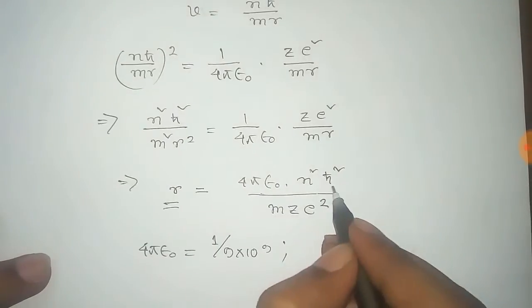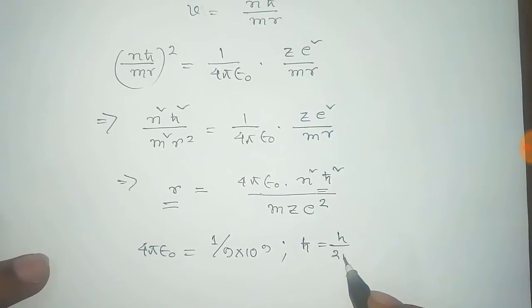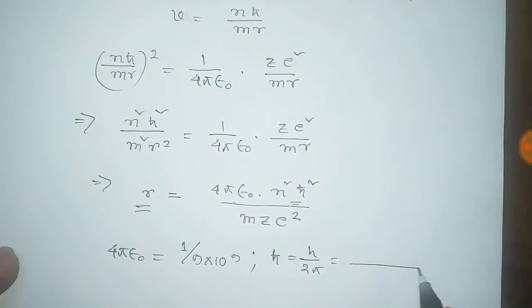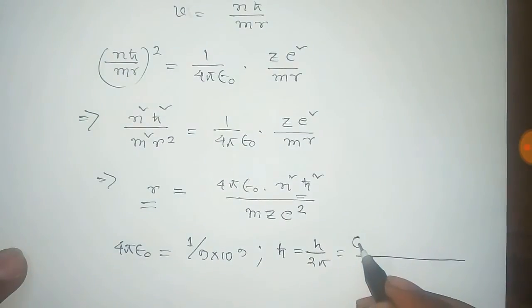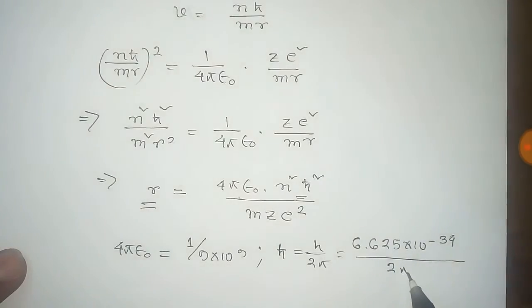The value of ℏ, the reduced Planck constant, is H/(2π), where the Planck constant H has a value of 6.625×10⁻³⁴ divided by 2π.